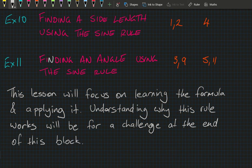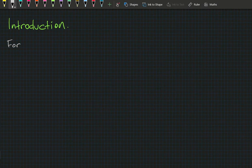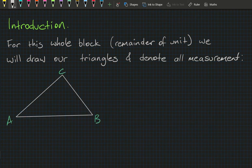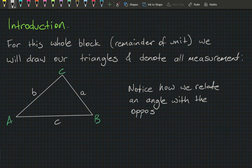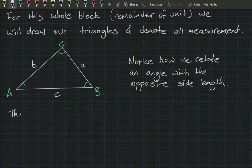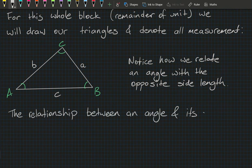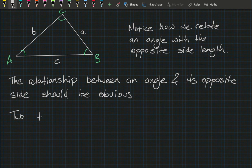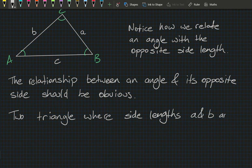For this whole block — the remainder of the unit — we're going to draw our triangles and denote all measurements in a consistent way. Notice how we relate an angle with the opposite side length: capital letters indicate angles. The relationship between an opposite angle and its side should become obvious, so let's think about two triangles where the side lengths a and b are the same.